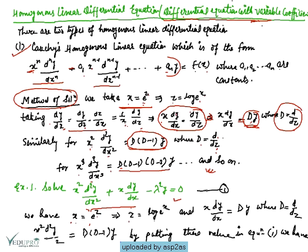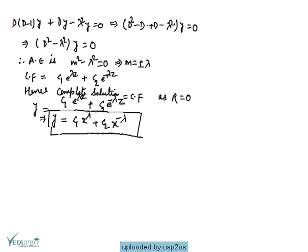This implies z = log(x), and x dy/dx = Dy, and x² d²y/dx² = D(D−1)y. After substituting all these, we get D(D−1)y + Dy − λ²y = 0.